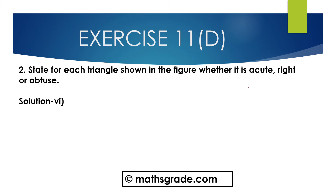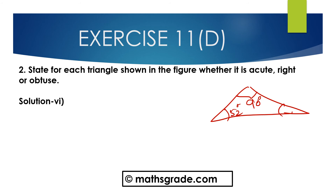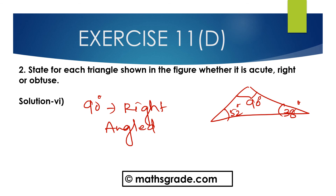Now question number 6. This is 90 degrees, this angle is 52 degrees, and this angle is 38 degrees. In this triangle, one of the angles is 90 degrees. We know any triangle whose one angle is 90 degrees, that triangle is said to be a right angle triangle. So this is a right angle triangle.